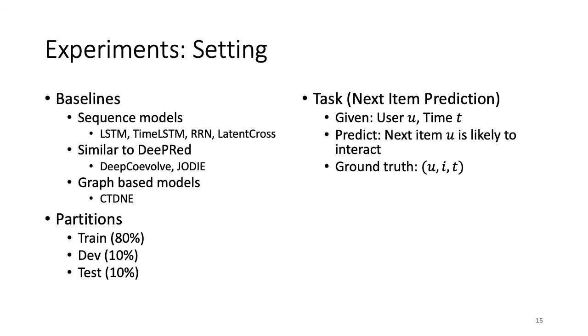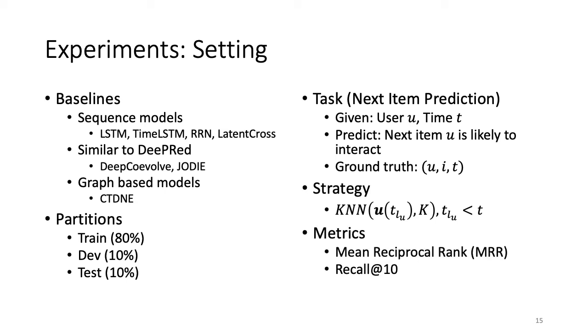The task is next item prediction, that is, given a user u and a timestamp t, we want to predict the next item that u is likely to interact with. And the quality of the prediction is evaluated with respect to the ground truth event containing u and i at time t. The prediction strategy is that we use the embedding of u, which we have learned during its last interaction that happened just before the current time. Then we find the k-nearest item embeddings for this embedding and return their id. We use the mean reciprocal rank and recall at 10 to evaluate the prediction quality.